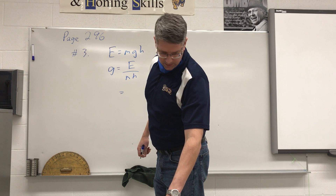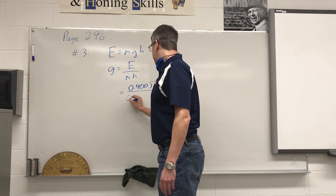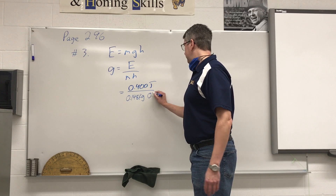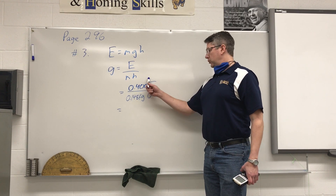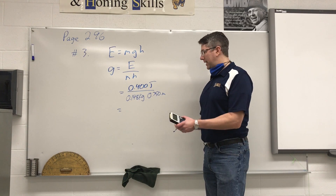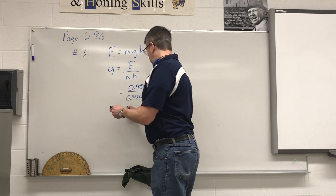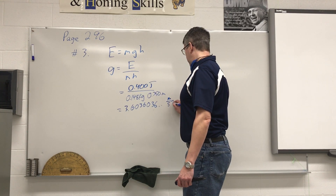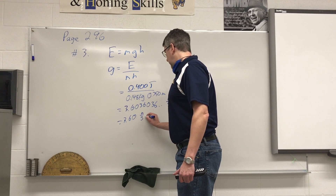Our energy is 0.400 joules, our mass is 0.148 kilograms, and our height is 0.750 meters. Because you have two parts in the denominator, take your numerator and divide by 0.148, then divide by 0.75 — or multiply them together in brackets. On my calculator, 0.4 divided by 0.148 divided by 0.75 gives 3.6036..., and with three significant digits that's 3.60 meters per second squared.